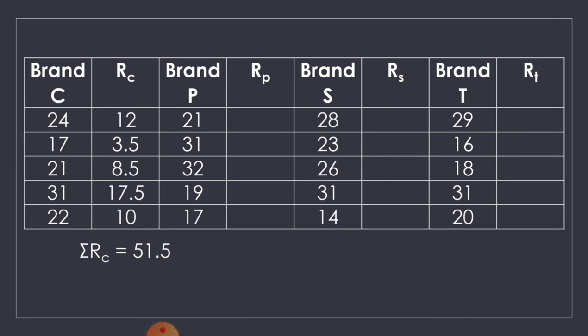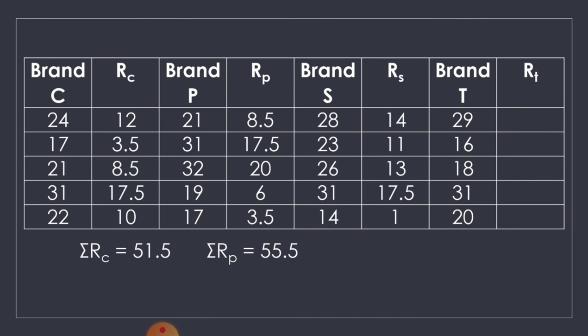Doing the same process for the remaining brands: For Brand P, the ranks are 8.5, 17.5, 20, 6, and 3.5. The summation of R sub P is equal to 55.5. For Brand S, the ranks are 14, 11, 13, 17.5, and 1. The sum is equal to 56.5.